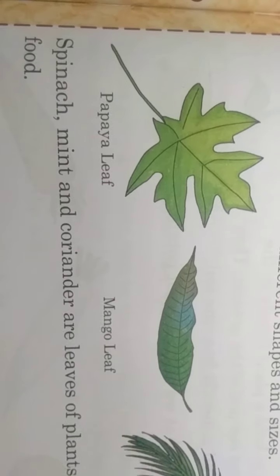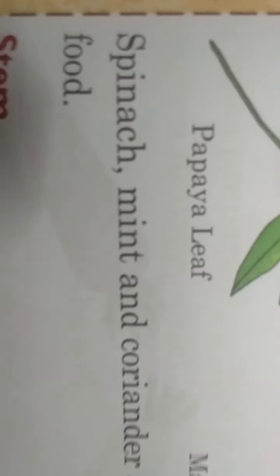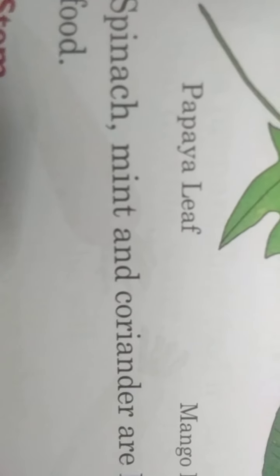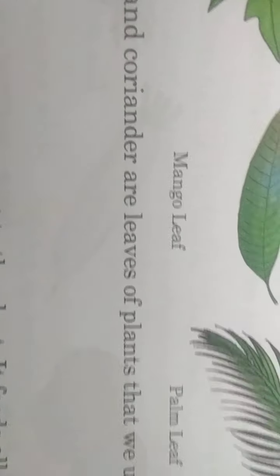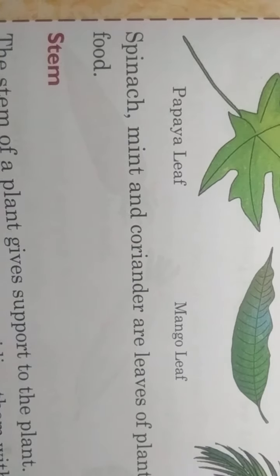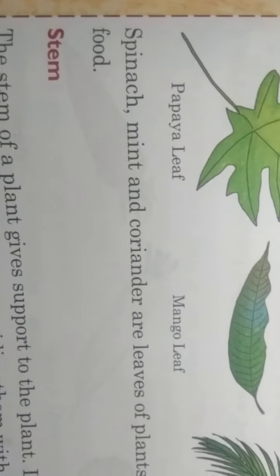Some leaves we use as food. The first one is spinach — spinach means palak. Mint means pudina, and coriander means dhania. We use spinach, mint, and coriander as food.